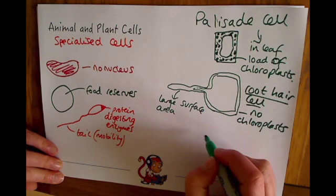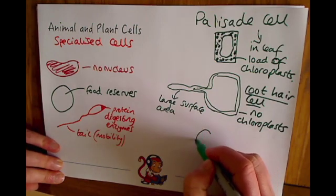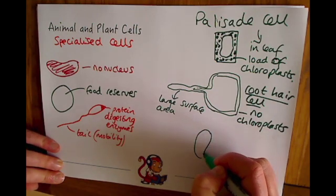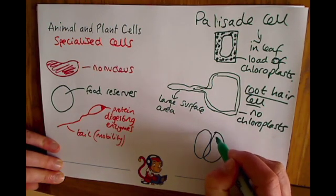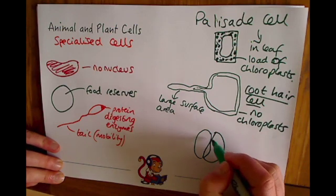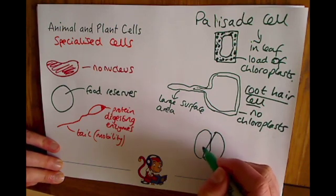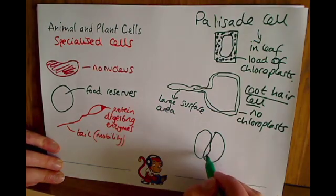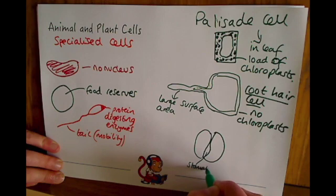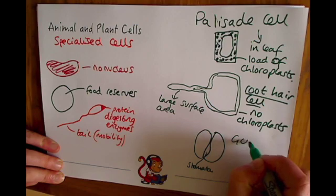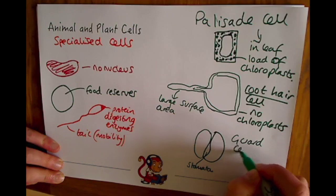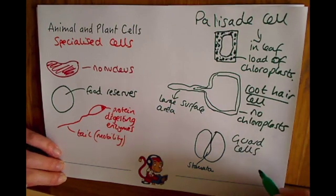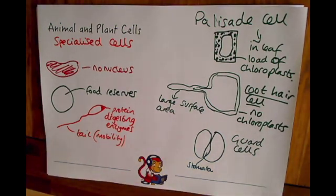Another example of these is something like the guard cells, which are around the stomata. Which is the opening in the bottom of the leaf. And these guard cells have that very specific kidney shape to allow this stomata here in the bottom of the leaf to be able to be opened or closed. So these guard cells look nothing like that rectangular structure that we drew before. They are a specific shape to be able to open and close and perform their function.